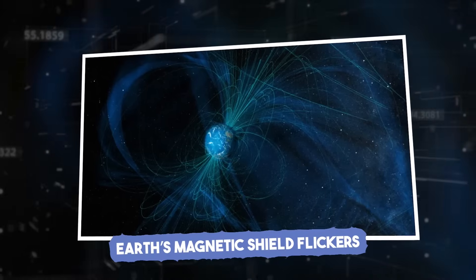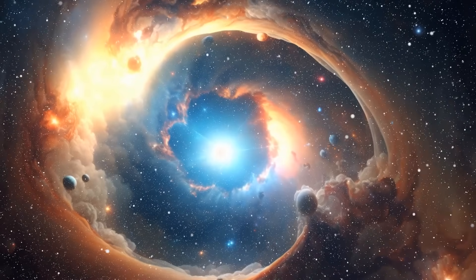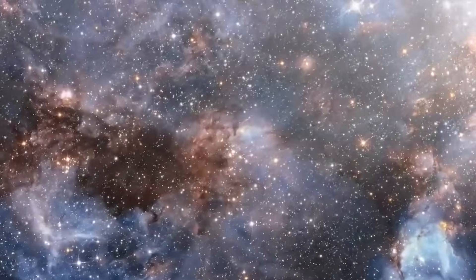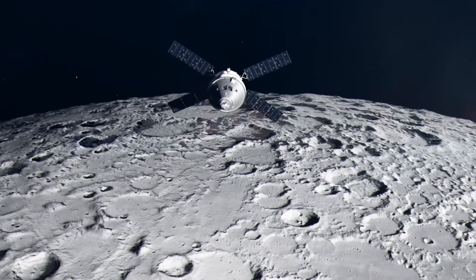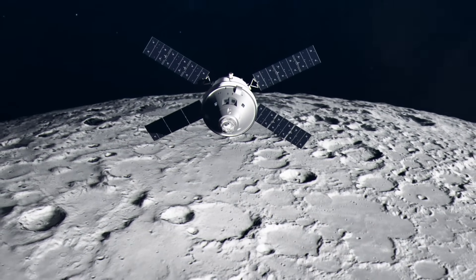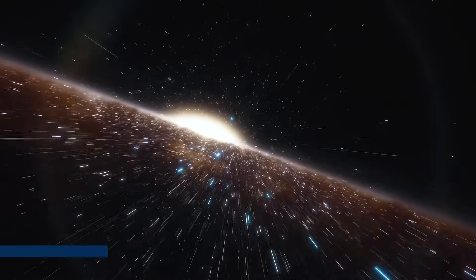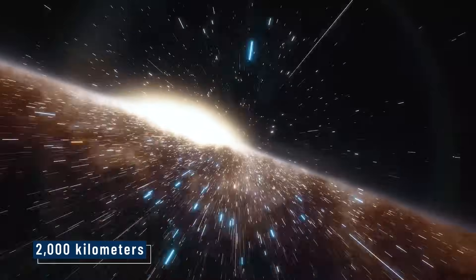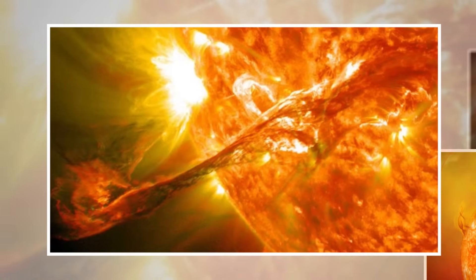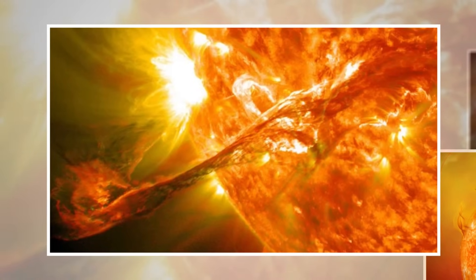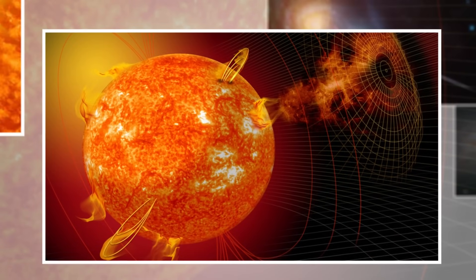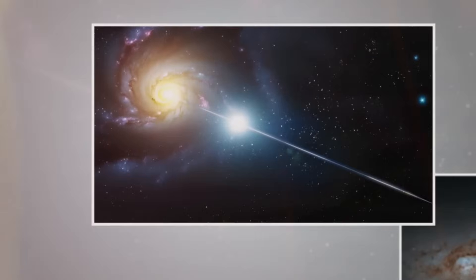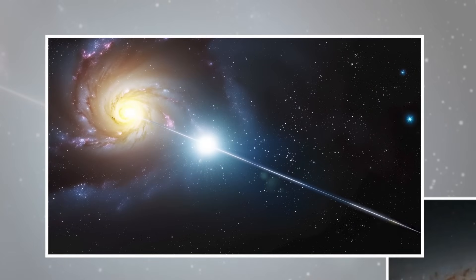Earth's magnetic shield flickers. At 3:51 a.m., just four minutes after the burst's arrival, Earth's magnetosphere, our protective magnetic bubble, twitched. Instruments onboard GOES satellites recorded a sudden inward compression. The shield shrank by 2,000 kilometers, pushing closer to Earth than normal. At first, scientists assumed a solar flare was to blame, or maybe a coronal mass ejection. But solar monitors were silent. No flares, no eruptions. The sun was calm.